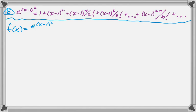So it's e to the quantity x minus 1 squared minus 1 all over x minus 1 squared when x isn't equal to 1. And then f of 1 is 1. That's just making it continuous.